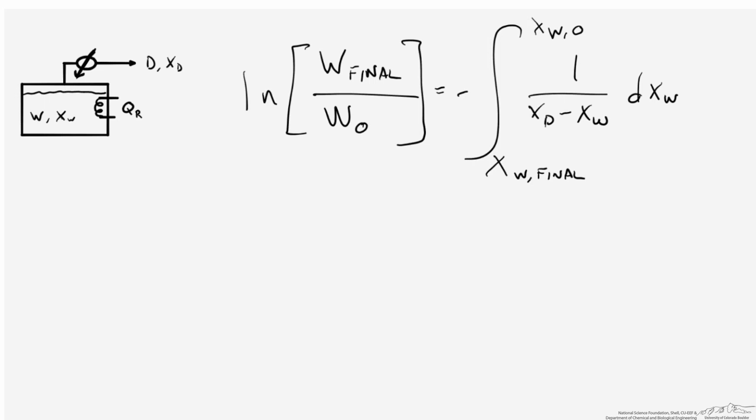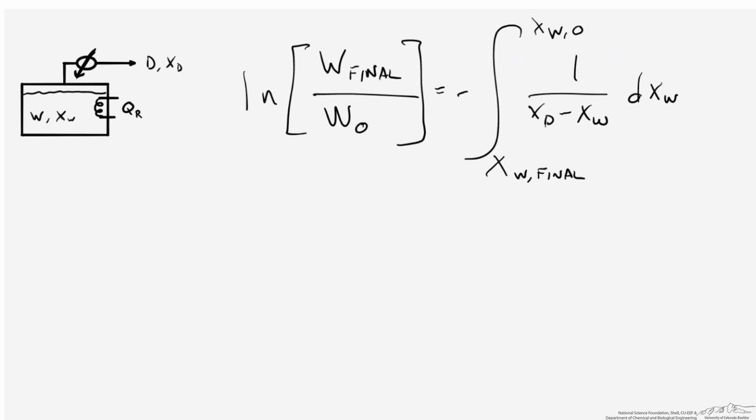The Rayleigh equation simply relates the amount of moles of liquid in the still at the beginning time point to the amount of moles in the still at the end of the batch still operation, and relates that to the integral of this term here, which relates the instantaneous composition of the distillate and the instantaneous composition of what's in the still — that liquid phase itself. We integrate this term on the right-hand side with respect to the composition of the liquid inside the still at any given time, and we integrate over the range from the final composition to the initial composition.